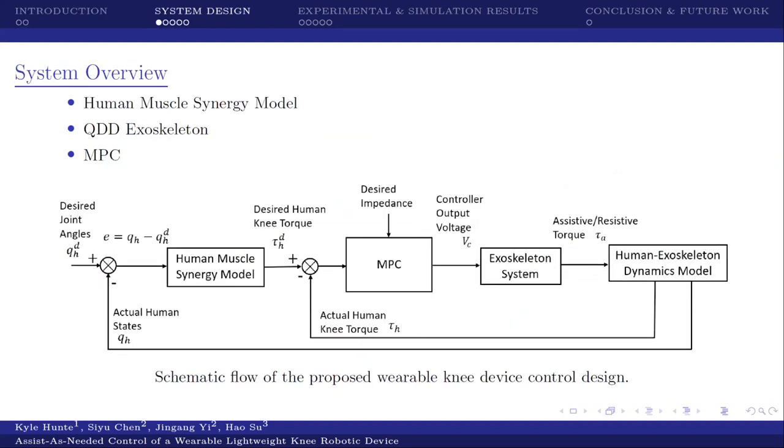Moving on to the next section, we present here an overview of the actual system. The three components I'll be discussing in this section are the human muscle synergy model, the QDD exoskeleton, and the model predictive controller.